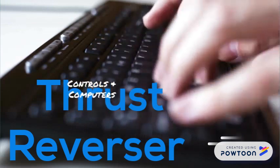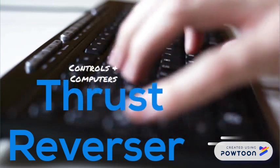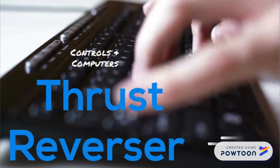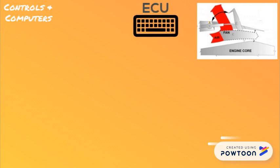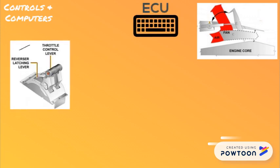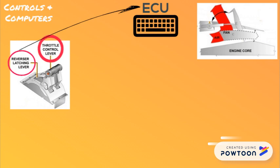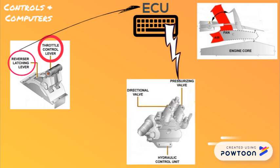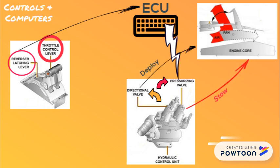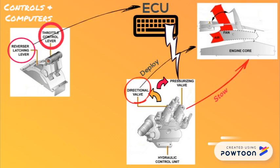Thrust reverser system controls and computers: the thrust reverser system is controlled through the electronic control unit from the two reverser latching levers located on the throttle control levers. The hydraulic control unit has a pressurizing valve and a directional valve to select deploy or stow mode, and the directional valve is operated to deploy only.